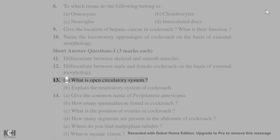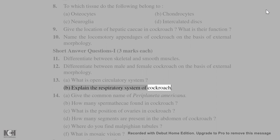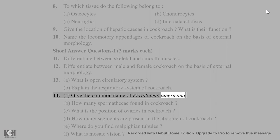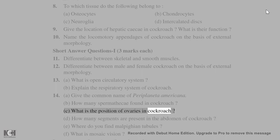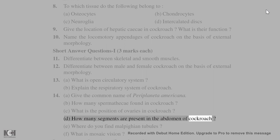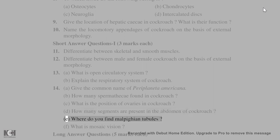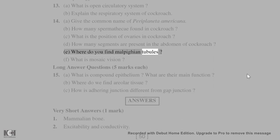13. A. What is an open circulatory system? B. Explain the respiratory system of cockroach. 14. A. Give the common name of Periplaneta americana. B. How many spermathecae are found in cockroach? C. What is the position of ovaries in cockroach? D. How many segments are present in the abdomen of cockroach? E. Where do you find Malpighian tubules? F. What is mosaic vision?